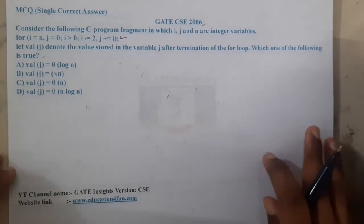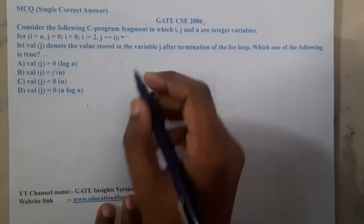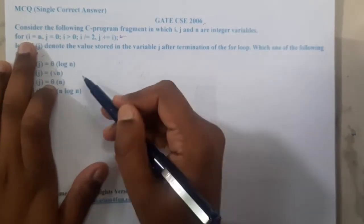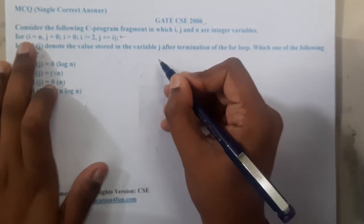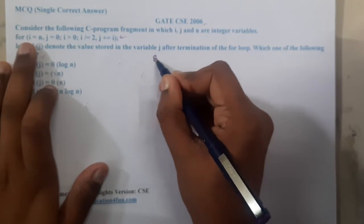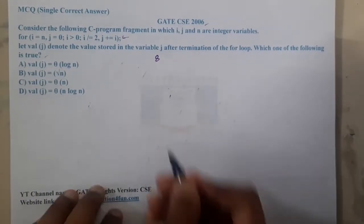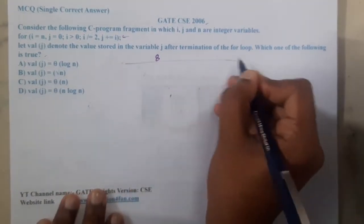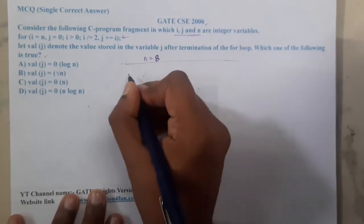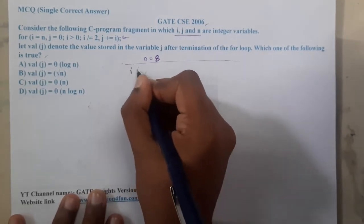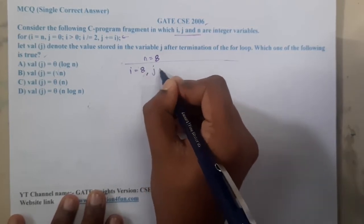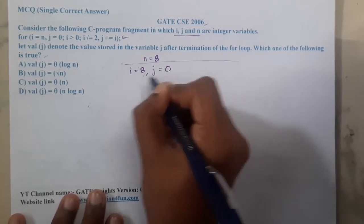Let us take an example for n. n is stored in i and it is being divided by 2. Let me take a two-divisible value to reduce confusion. Let's take 8 — that will be a good option, rather than 4 which is really low. So let us start analyzing it. The value of n equals 8, and everyone is an integer — remember that. The value of i is initialized to n, so i equals 8, and the initial value of j is zero. The initialization part is done.